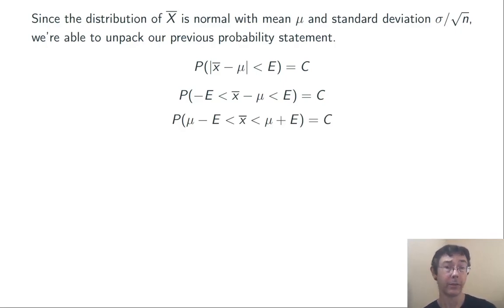Adding mu to both sides of that inequality, we get that the probability of mu minus E less than x bar less than mu plus E equals C.